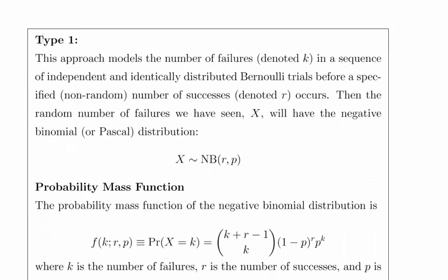There's two distributions - Type 1 and Type 2. They're similar enough, but there's a subtle difference between the two. This approach models the number of failures, denoted K, in a sequence of independent and identically distributed Bernoulli trials before a specified number of successes, denoted R, is found.